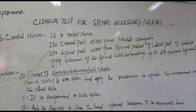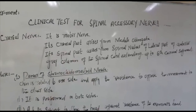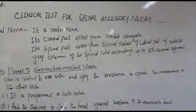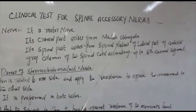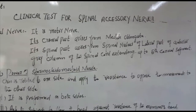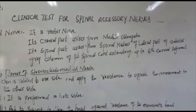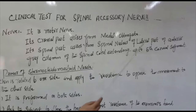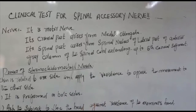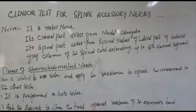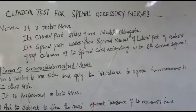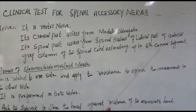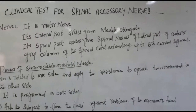It is a motor nerve. Its cranial part arises from the medulla oblongata. Its spinal part arises from the spinal nucleus of the lateral part of the anterior gray column of the spinal cord, extending up to the fifth cervical segment.